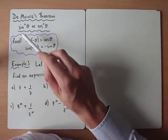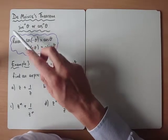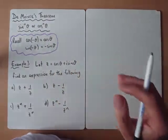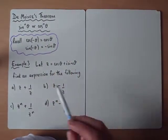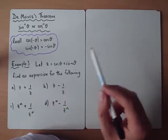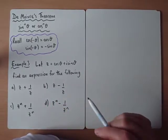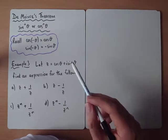In the last one we were looking at sine 3 theta, cos 3 theta. If we're asked about sine to the powers or cos to the powers, there's another technique that we need to look at. It's important that you see the distinction between the two techniques. Because if you try and do the opposite technique in the exam, you'll just get into a real mess and you won't get anywhere.